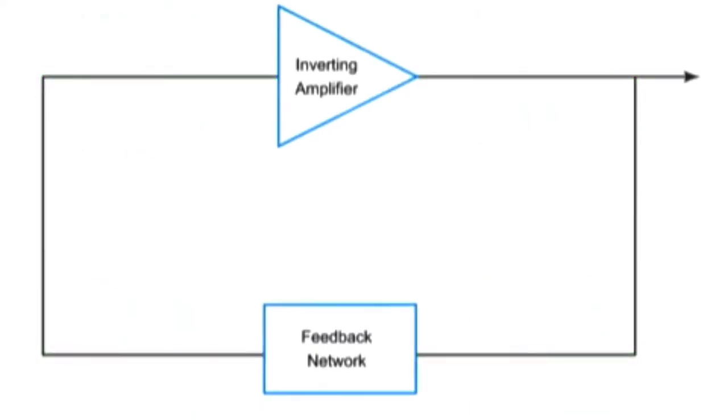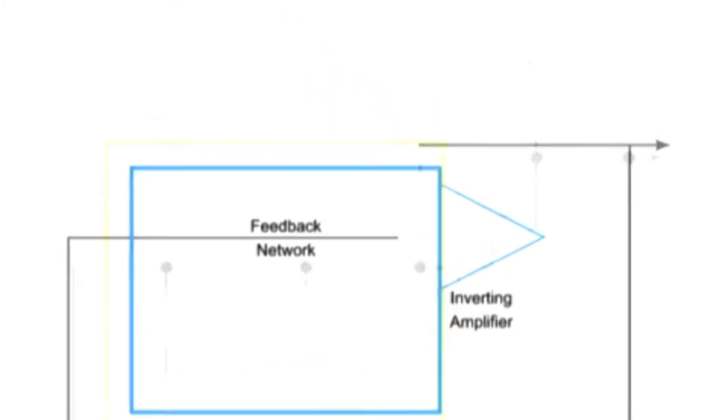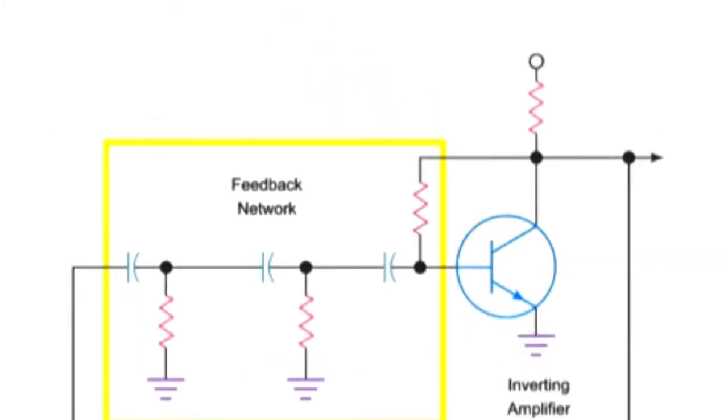Feedback networks can function in a variety of ways. In this oscillator example, a phase shift network is employed. This feedback network uses a series of capacitors and resistors to shift the signal's phase by 180 degrees as the signal passes through the network.